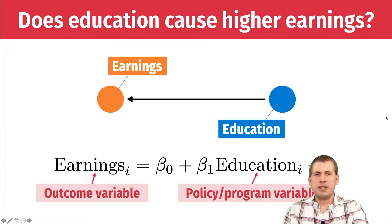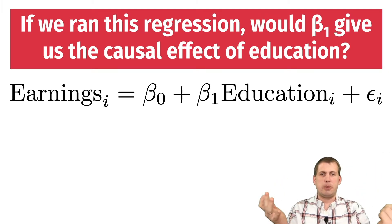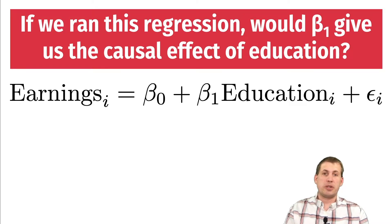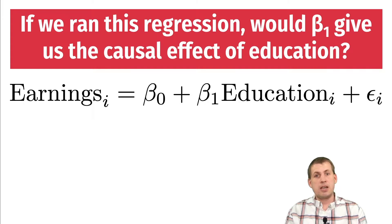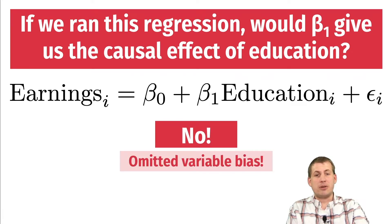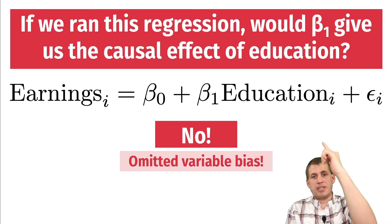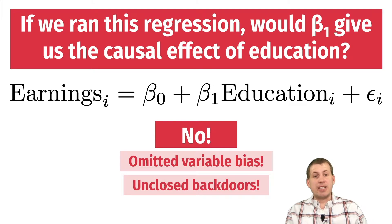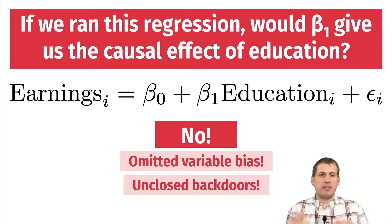So let's say we run this regression. We use R — `lm(earnings ~ education)` — we run it and get a beta coefficient for beta one, then interpret it as the causal effect of an additional year of education on earnings. Can we legally talk about causation in this case? No — and hopefully at this point in the semester you know that. There's a whole host of reasons why that is not the causal effect. We've talked about omitted variable bias; there are unclosed backdoors that cause both education and earnings and confound that effect, so we can't talk about beta one in causal language.